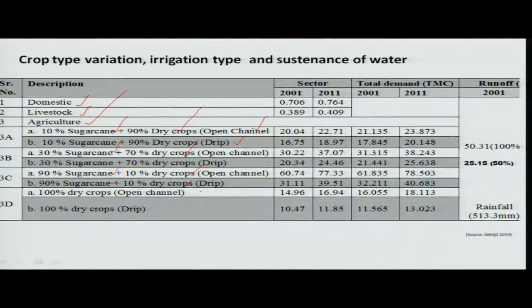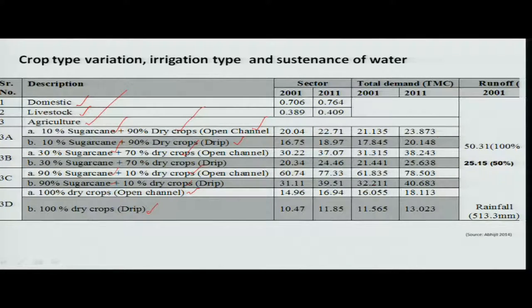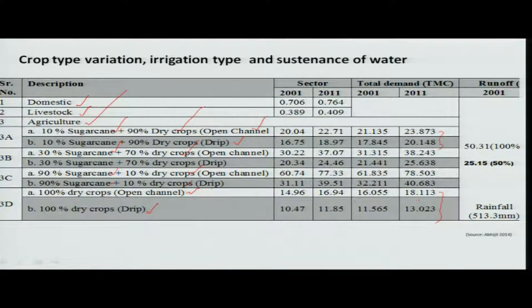The extreme condition is to make everything only dry crops and use either open channel or drip irrigation. These sector requirements are given here, and as you can see, a lot of water savings is possible. With 10% sugarcane, the figure is around 3 TMC, whereas 100% dry crop water requirement has come down to 18 TMC. So adopting drip irrigation methods means water demand from these villages can be minimized and crops will give better yield.